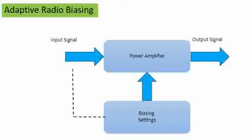Basically, for any RF chips, the power amplifier is very important. It is the major consumer of current in those particular chips. The power amplifier has to be biased, meaning we have to provide sufficient current for the power amplifier to perform its operation.